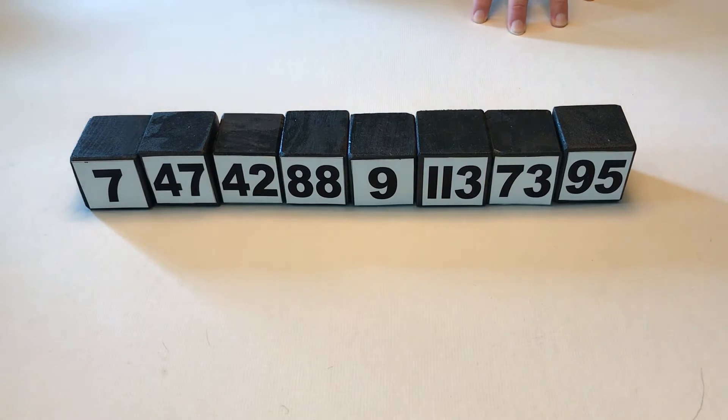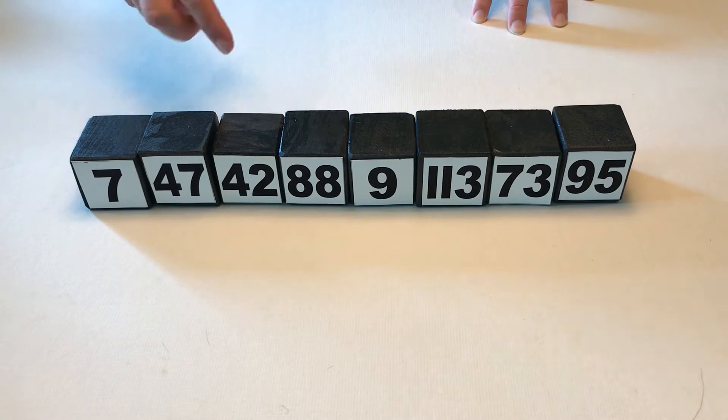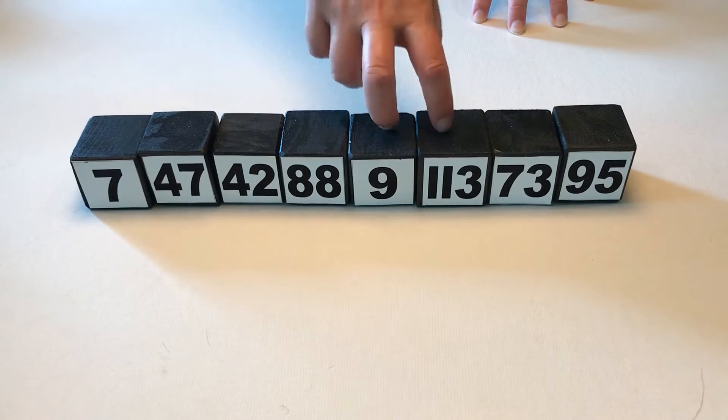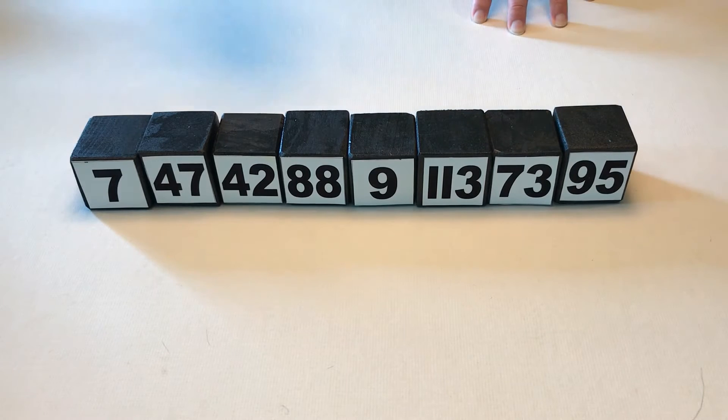The way bubble sort works is there's an inner for loop and an outer for loop. We're going to first execute the inner for loop, and what it does is compare adjacent numbers to see if they're in order or out of order. If they're out of order, they swap.